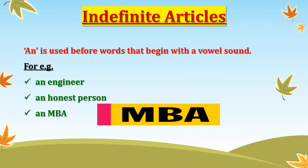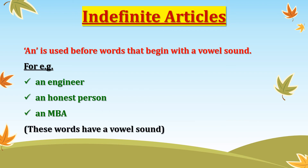'An MBA.' Listen carefully — M-B-A starts with an 'em' sound, which is a vowel sound. Again, it will use 'an' as the article. These words have a vowel sound and that is why we are using 'an' and not 'a' as the article.